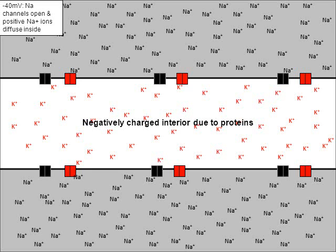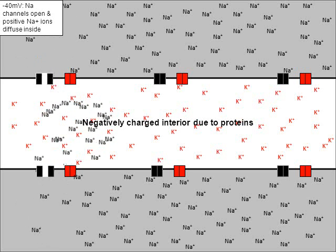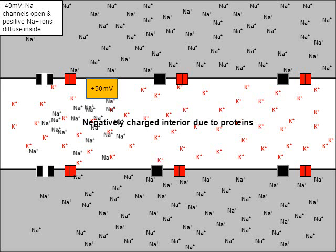So what happens during an action potential is that around negative 40 millivolts, watch the two black doorways on the left — they're going to open. These black doorways represent sodium channels; the channel is simply a passageway. The sodium channels respond and open around negative 40 millivolts. When that happens, sodium will rapidly diffuse to the inside of the neuron. The inside is normally negatively charged, but because of all the positive sodiums that just entered, the charge rushes up from negative all the way up to positive 50 millivolts.